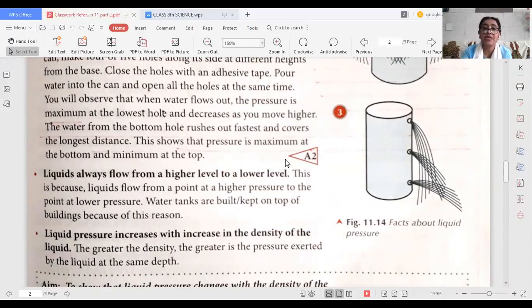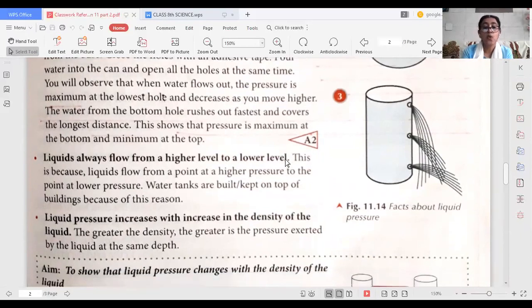That's why the water tanks are always kept where? At the top of the buildings. Then liquid pressure increases with increase in the density of the liquid. The greater the density, the greater is the pressure exerted by the liquid at the same depth.